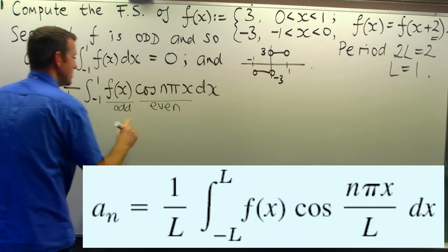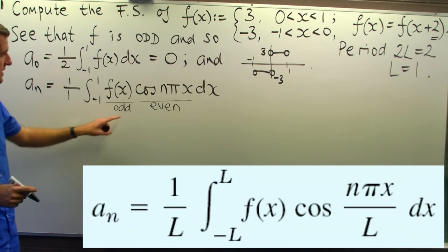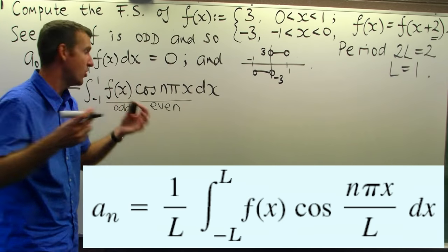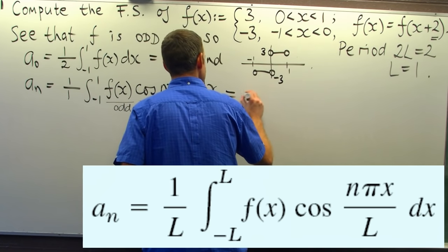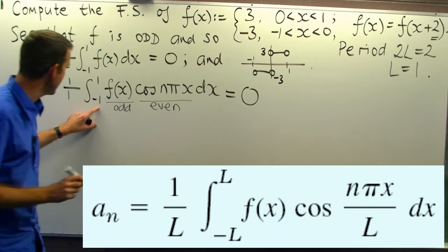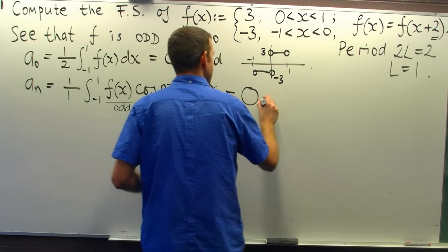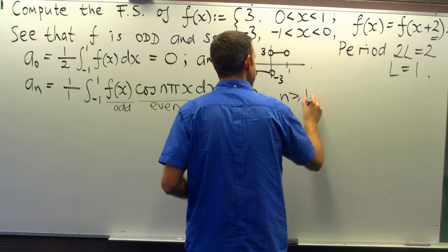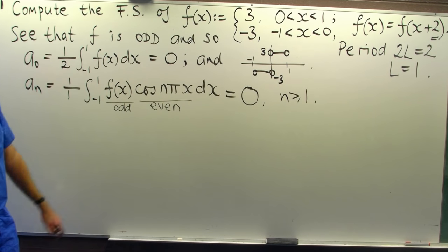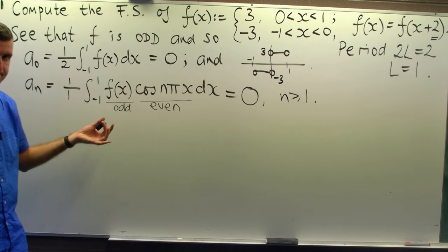So we've got the integral of an odd function times an even function. An odd function times an even function gives us an odd function. So we're integrating an odd function between minus 1 and 1. It's got to be 0. Again, the areas cancel. So for each n greater than or equal to 0, this integral is 0.